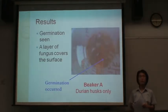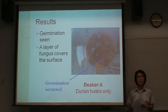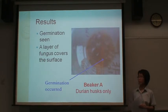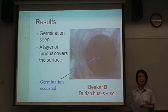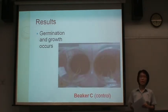The results are: for Beaker A, germination occurred and a layer of fungus covers the surface. For Beaker B, the results are the same as Beaker A. And for Beaker C, germination is low.